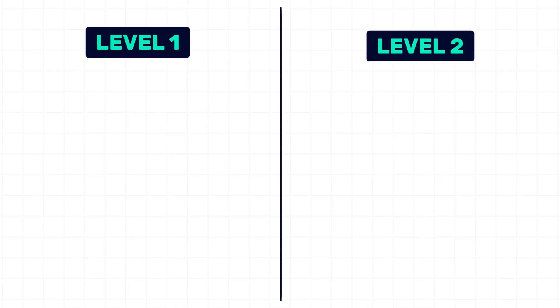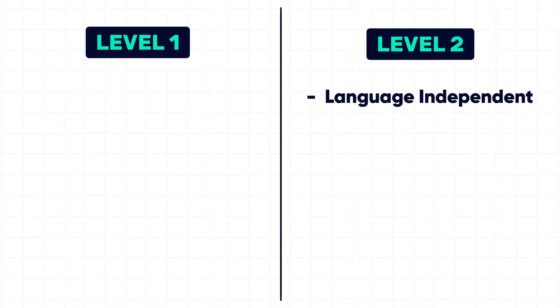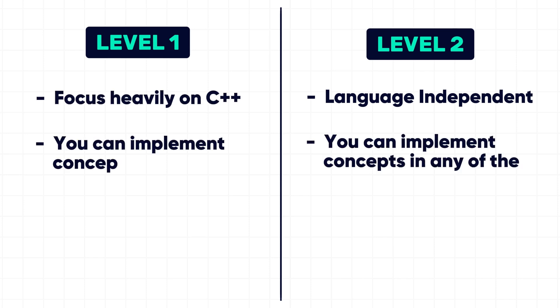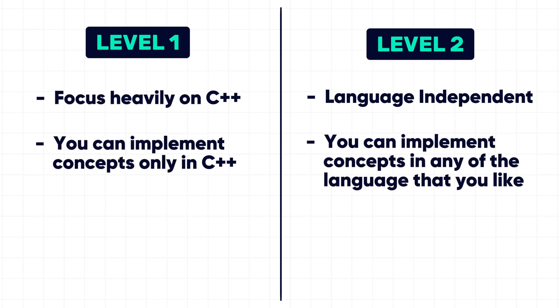An important differentiation between level 1 and level 2 is that level 2 is language independent. While in level 1 we focus heavily on C++, in level 2 we teach you concepts in a way so that you can implement them in any language that you like.